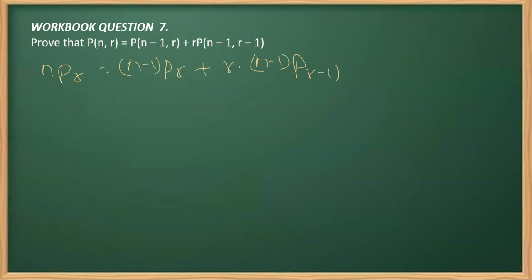So what we can write the LHS as: this is n factorial over (n minus r) whole factorial.